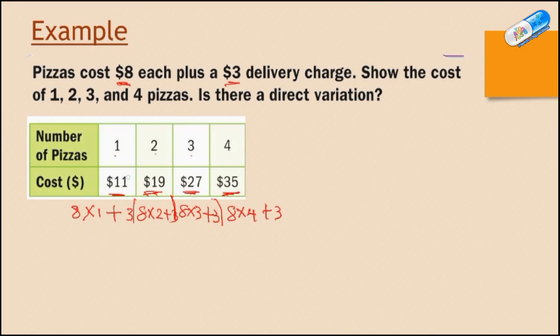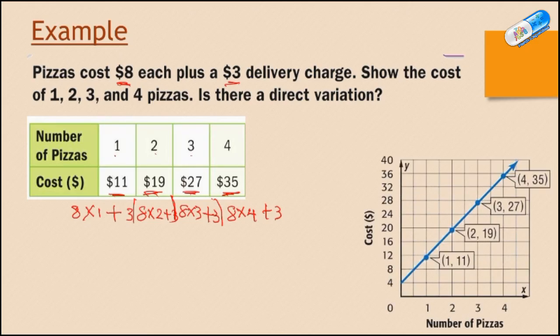Now we have to determine if this is a direct variation or not. So if we draw a graph for these points, this is the y, this is the cost, and this is the x number of pizzas. The first point is 1 and 11, so 1 and 11 is here. The second one is 2, 19. The third is 3, 27. And the fourth is 4, 35. And you draw the line, connect the line between the points. As you see from the graph, we see that the line here is not passing through the origin. So we have to say that this is not a direct variation from the graph.